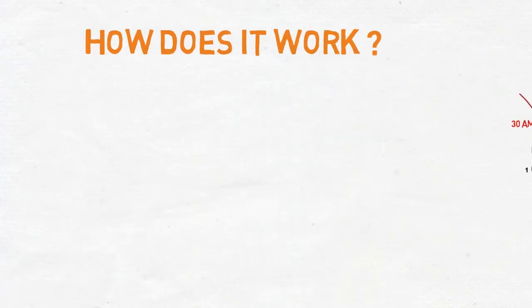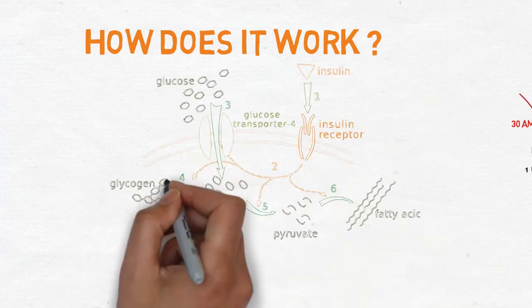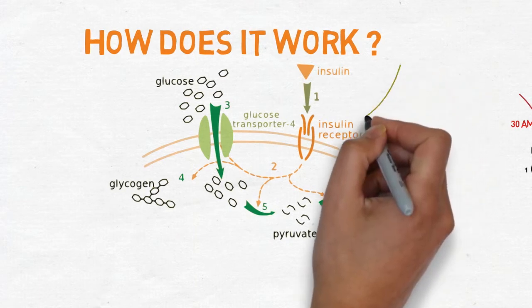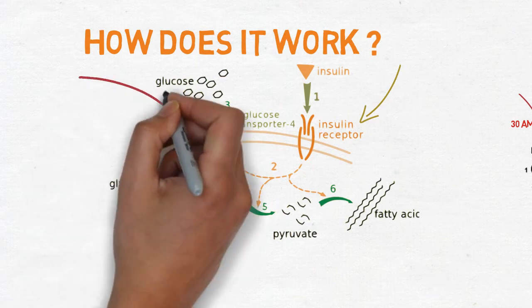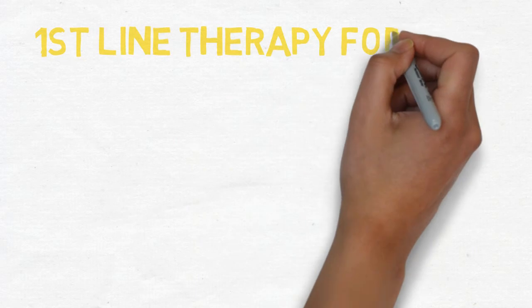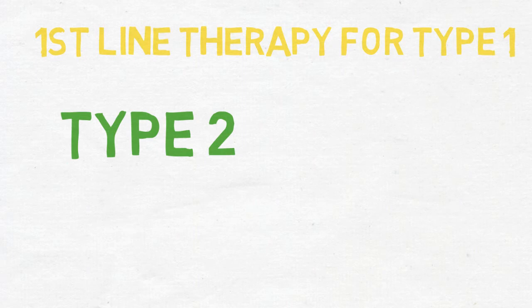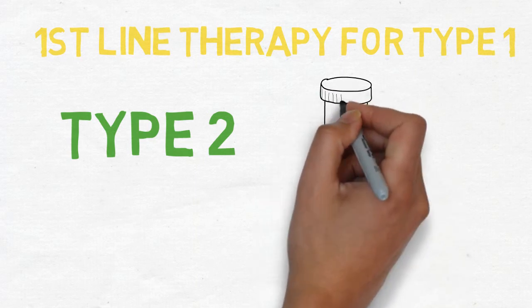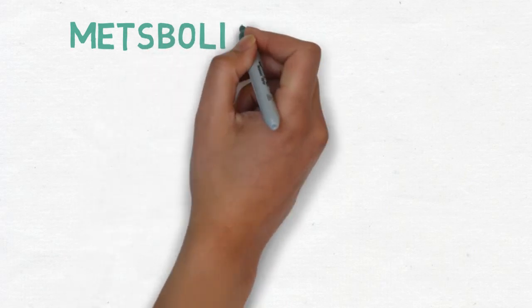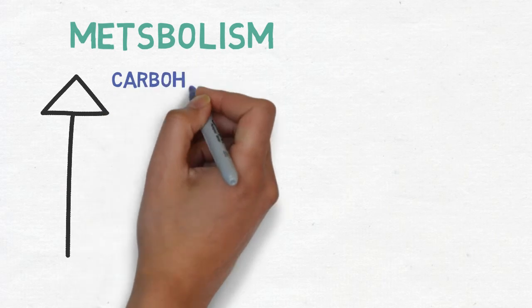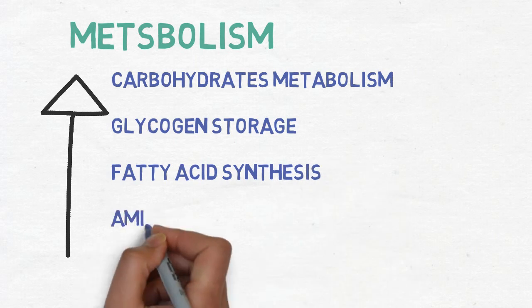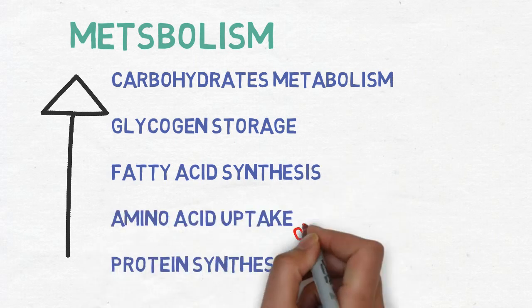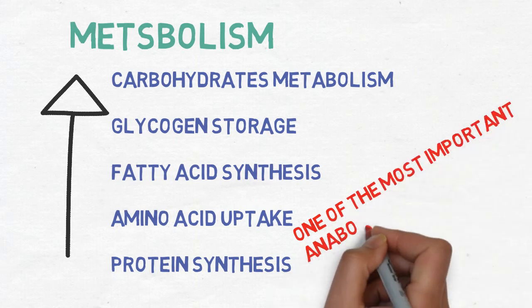So how does it work? Insulin works on the receptor tyrosine kinase. Binding to this receptor initiates a signal transduction that eventually leads to facilitate the diffusion of glucose into the cells. Insulin is considered to be the first-line therapy in type 1 diabetes. However, in the case of type 2 diabetes, a number of treatments may be employed prior to initiating insulin, due to type 2 diabetes being an insulin resistance disease rather than an insulin deficiency. Insulin plays a very important role in metabolism, causing an increase in carbohydrate metabolism, glycogen storage, fatty acid synthesis, amino acid uptake, and protein synthesis. Thus, it's considered to be one of the most important anabolic hormones.